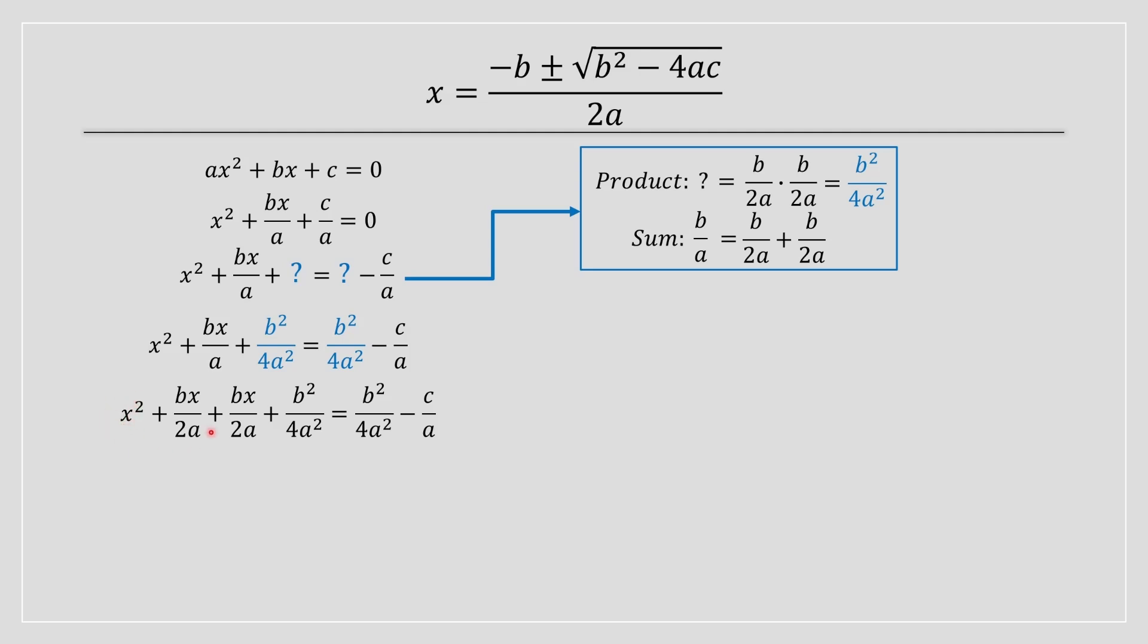For this group of fractions, we're going to factor out an x, because they have an x in common. And on the second group of fractions, we're going to factor out a b divided by 2a, because they both have a b divided by 2a in common.